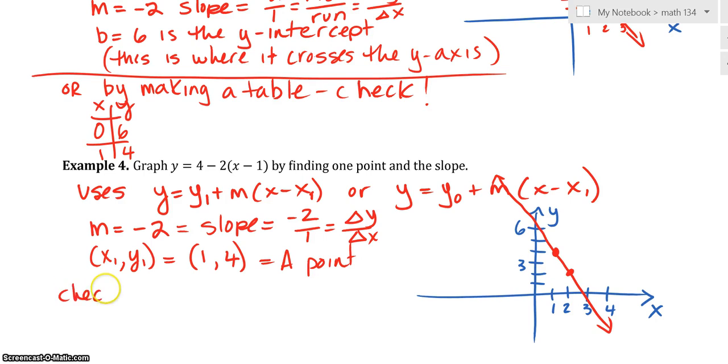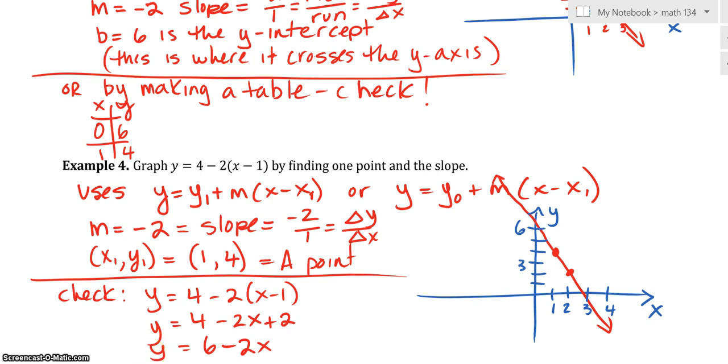To check that, let's do a check for that one. Let's just make sure it's the same. If I multiply this out, I do indeed get y = 6 - 2x. Yep, it is the same as above.